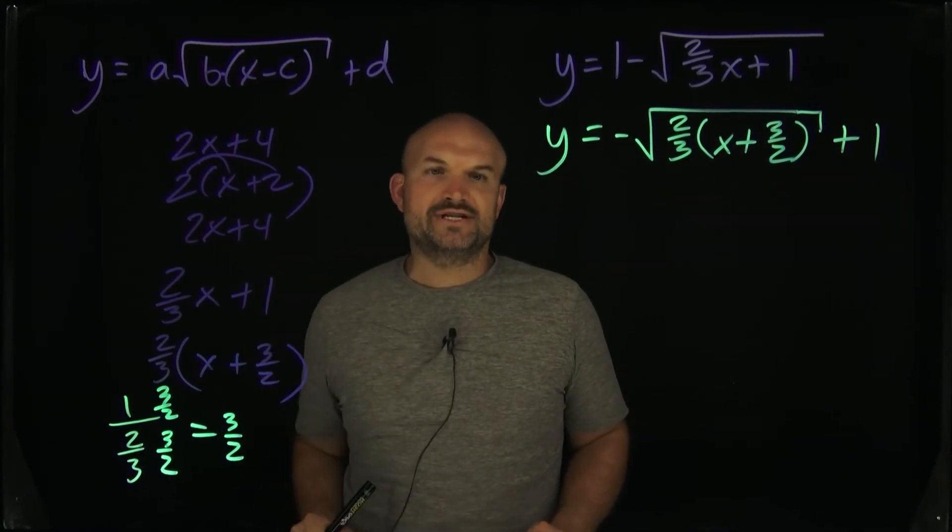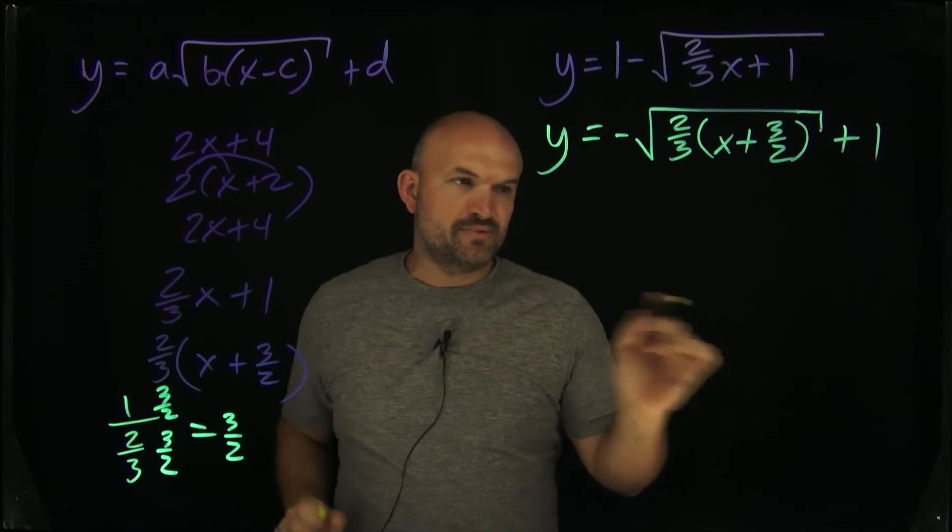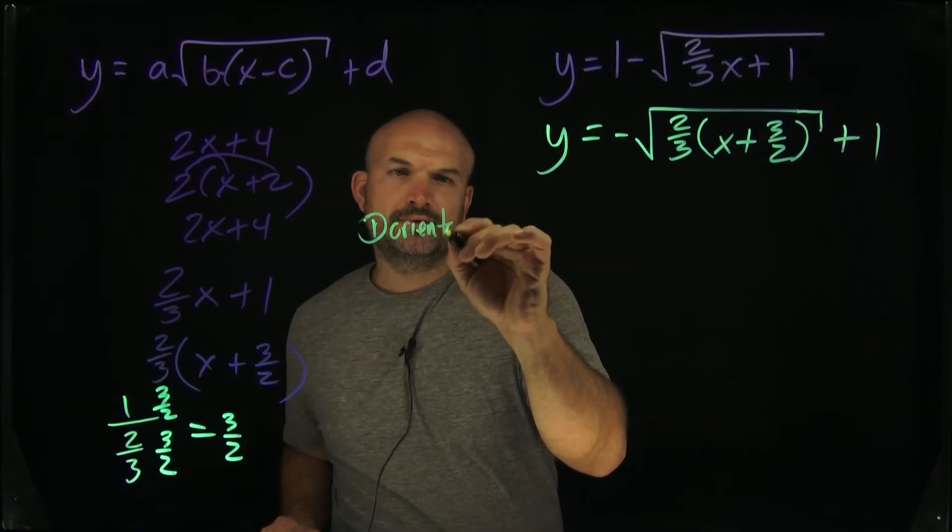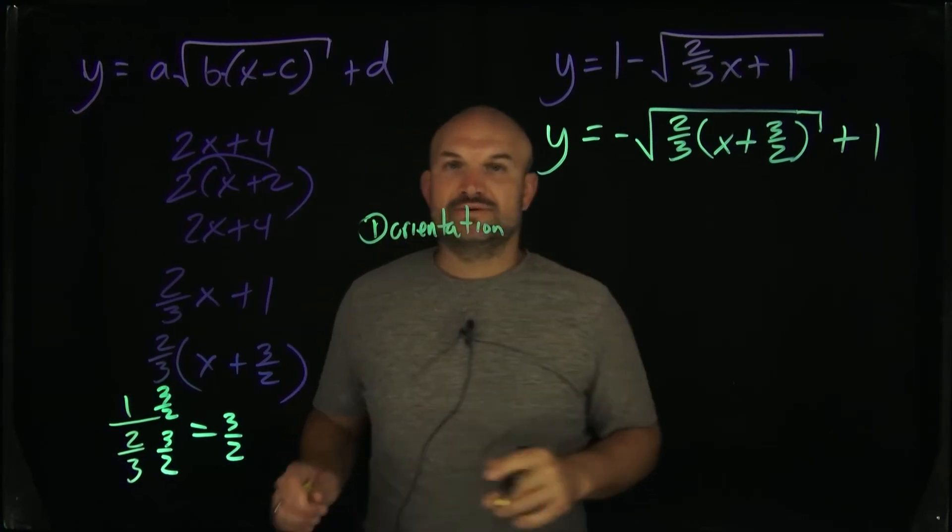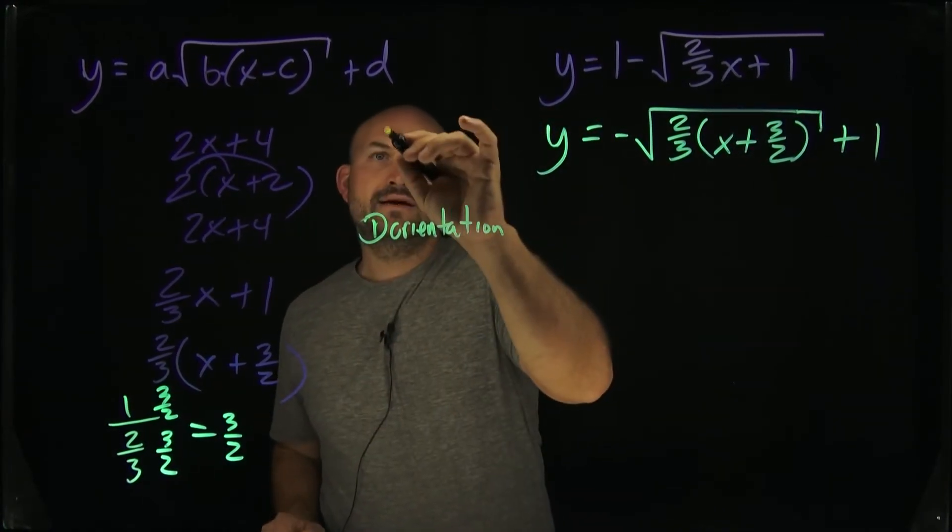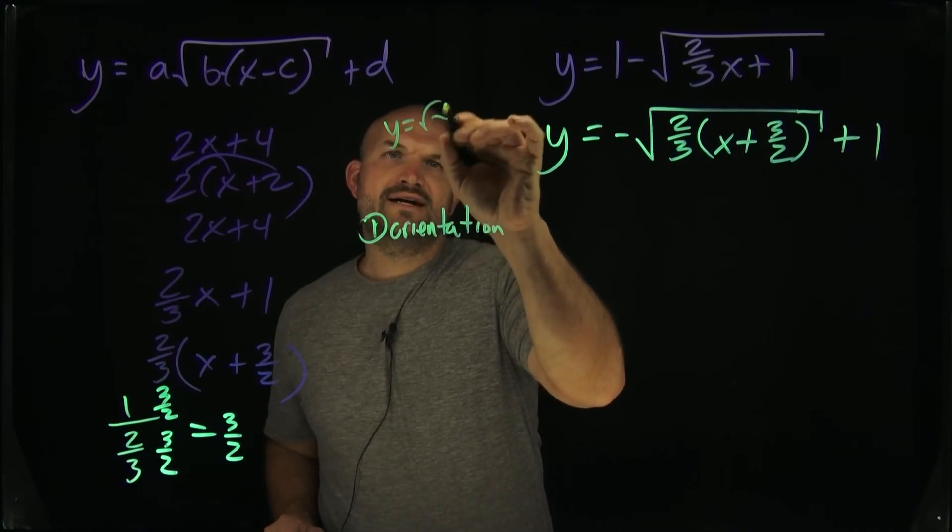Well, the main important thing that I want you to understand is the way I like to do this is I like to break this apart in two parts. The first part is going to be the orientation. All right? What I want to do is I want to know, all right, where is this graph going? So we know that y equals the square root of x looks like this.